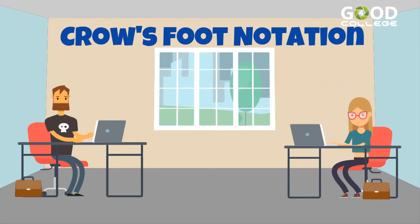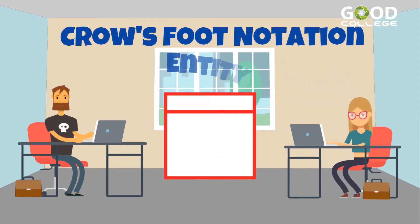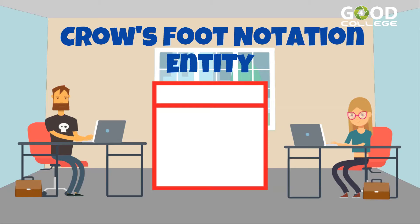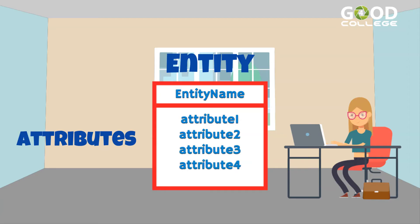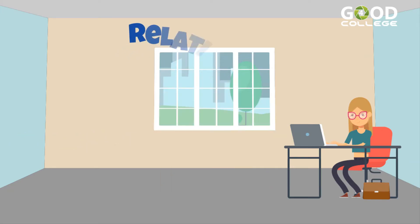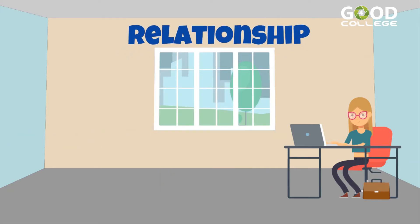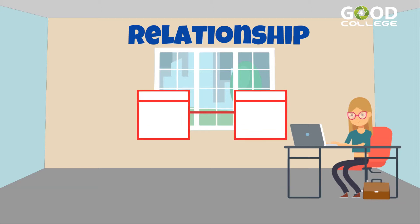In Crow's Foot Notation, an entity will be represented by a box, with the name of the entity on the first section of the box. The attributes will be listed in the second section of the box. To mark the attribute that acts as an identifier, an asterisk is used at the front of the attribute. The relationship is represented by a line, which illustrates the association between two entities.